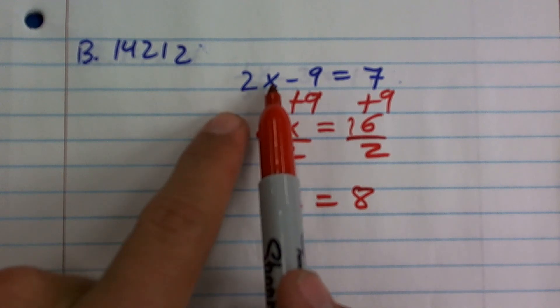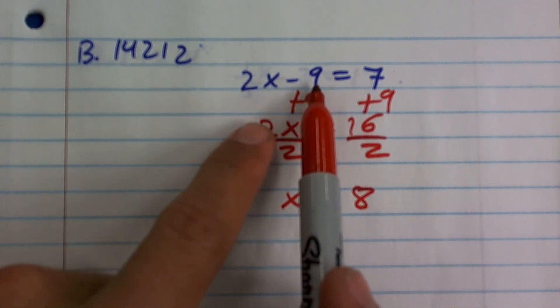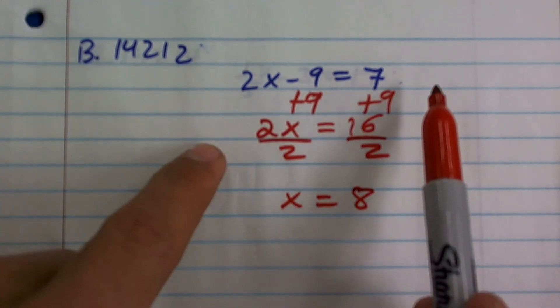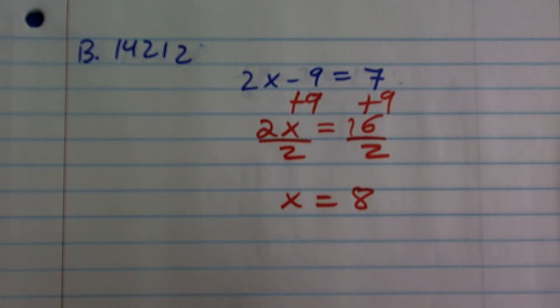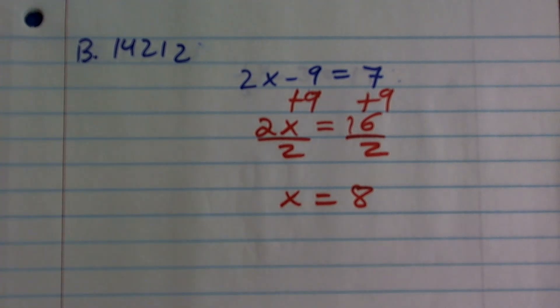Let's take a look at it. 2 times 8 is 16. 16 minus 9 is 7. So of course you have an equation because the left side is equal to the right side, which is true when our value of x is 8.